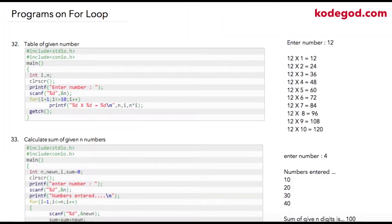This is our first program using a for loop. The user will enter one number, and we are required to print the table of that number. Suppose the user has entered 12, so our program should print 12 multiplied by 1 equals 12, 12 multiplied by 2 equals 24, and so on till 12 multiplied by 10 equals 120.